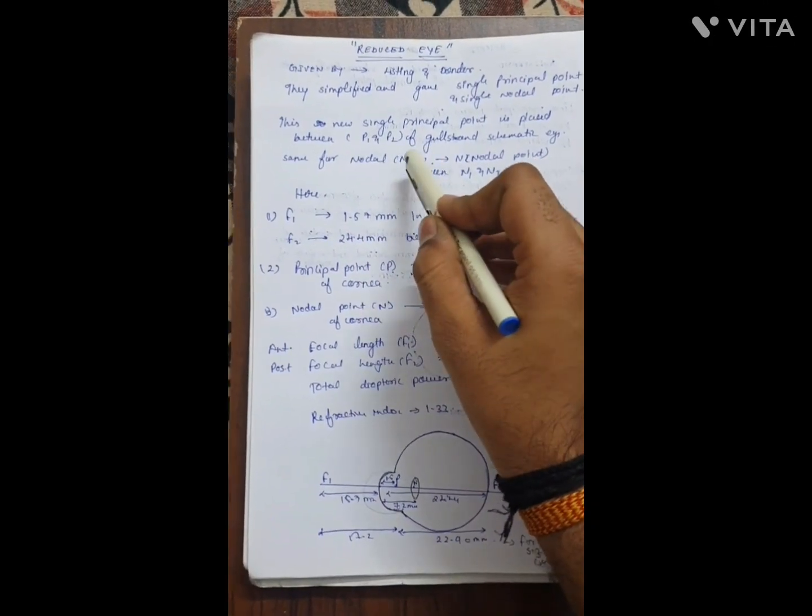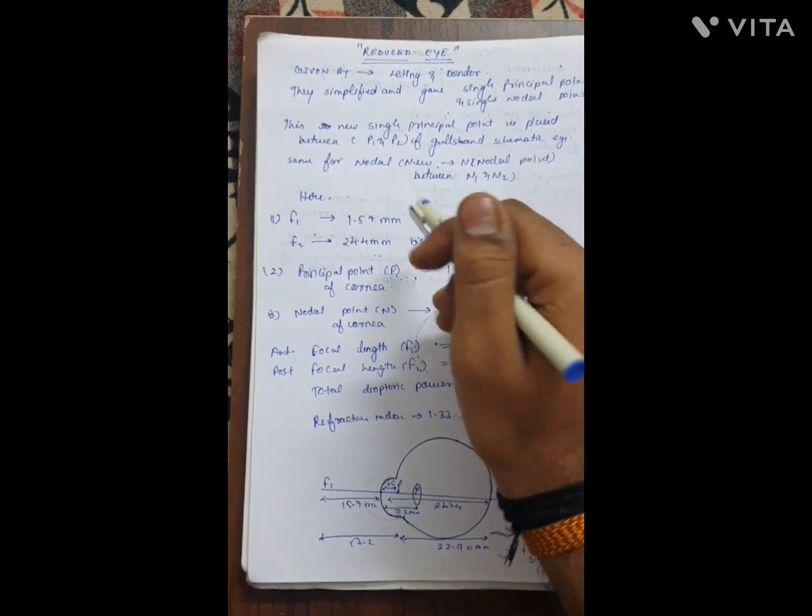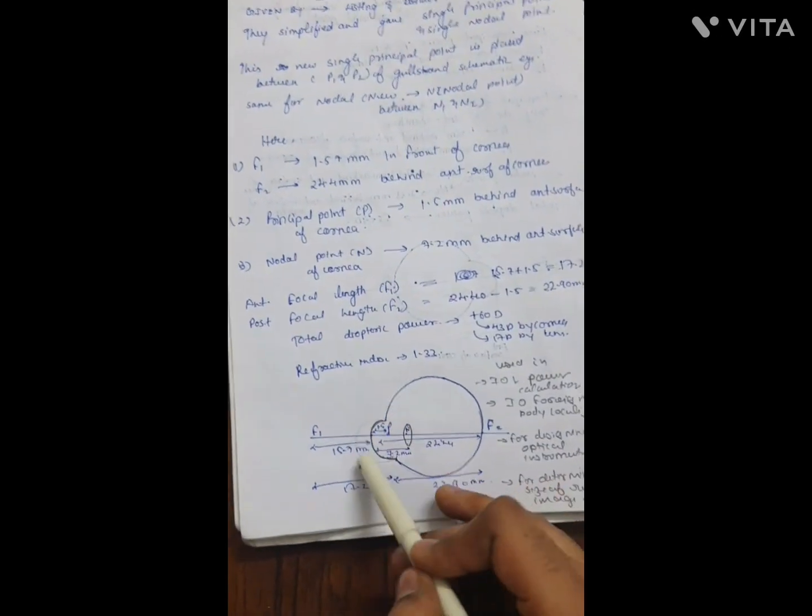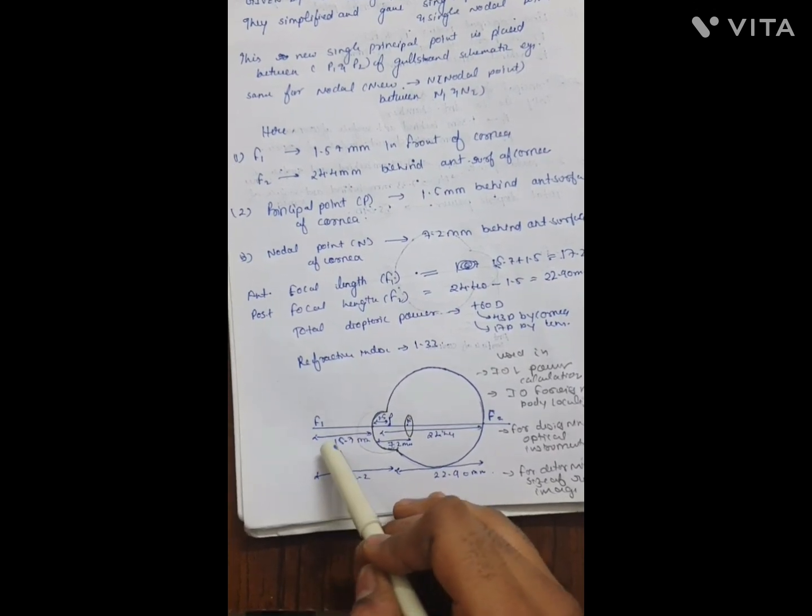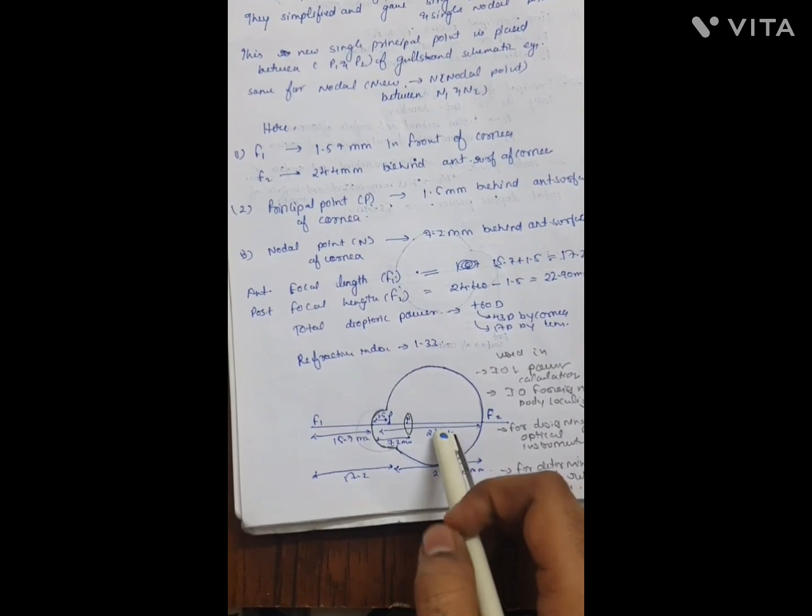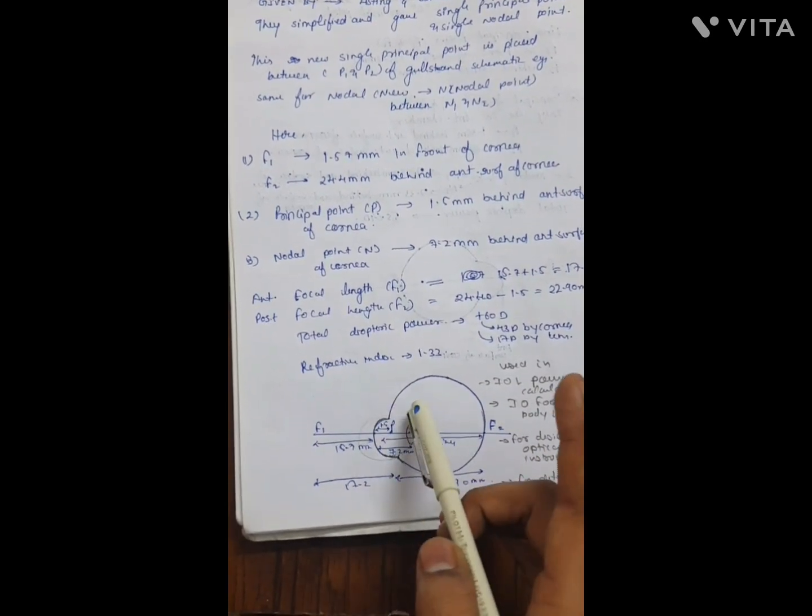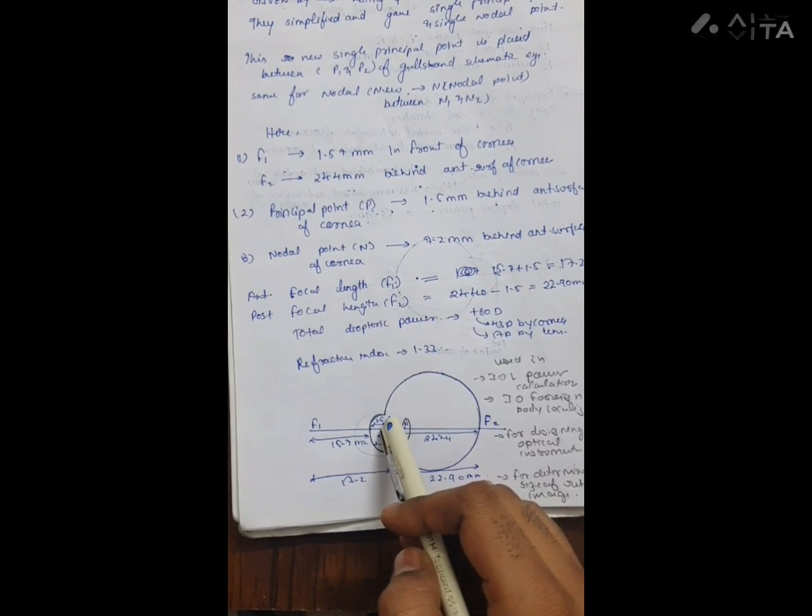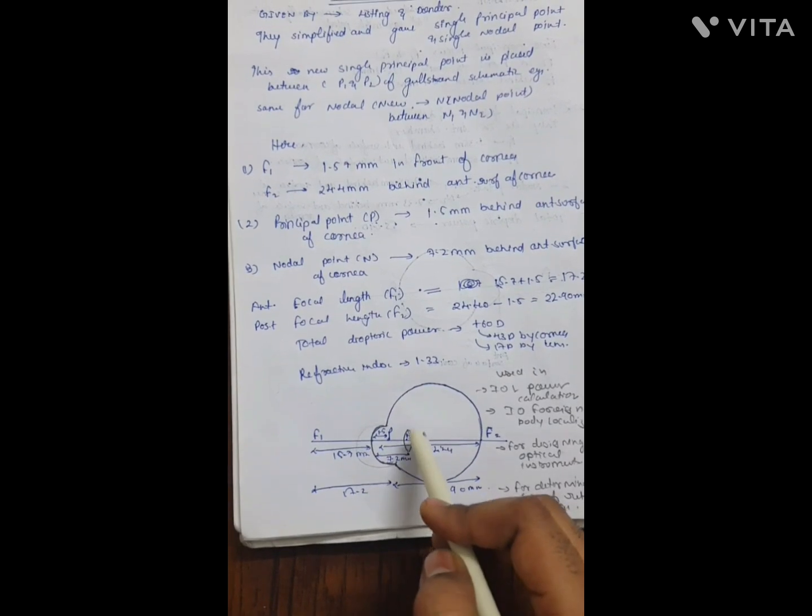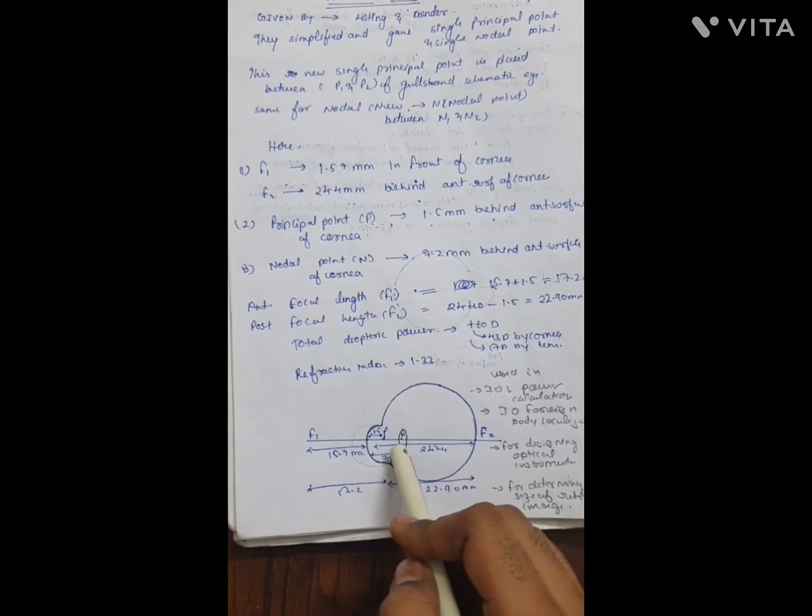In the reduced eye diagram, F1 is the same at 15.7 millimeter in front and F2 is 24.4 millimeter behind the anterior surface of cornea. The single principal point P is 1.5 millimeter behind the anterior surface of cornea, and the single nodal point N is 7.2 millimeter behind the anterior surface of cornea.